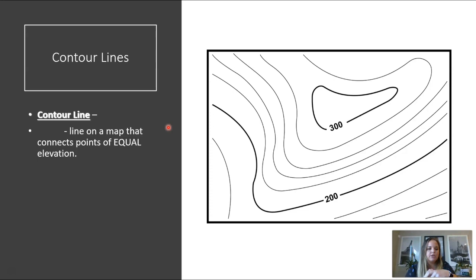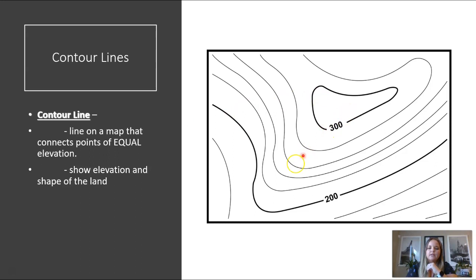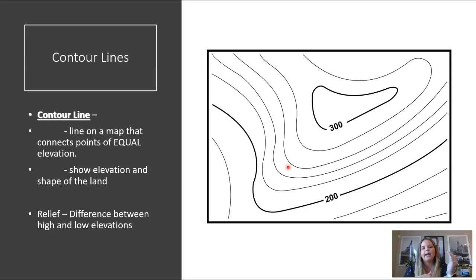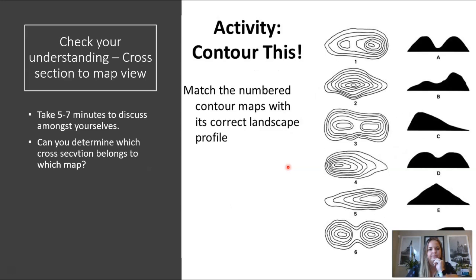Getting into contour lines — contour lines are a line on the map that connects areas of equal elevation. They do not give you exact elevation; it's all approximated. They show you the elevation as well as the shape of the land, giving you an idea of whether there might be a lobe coming out based on how the contour lines are acting. They also show you the relief, or the difference between high and low elevations. Relief is another term a lot of people use for elevation or topography.